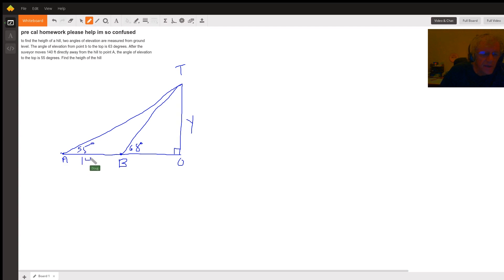And this distance right here from A to B is 140. We also don't know the distance from B to O, so let's call that x. So we have two unknowns, x and y.